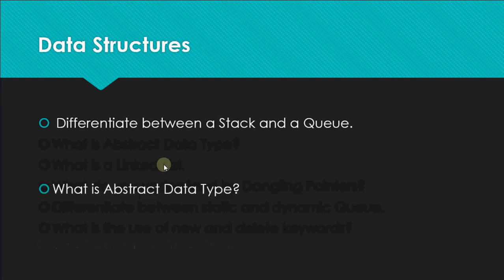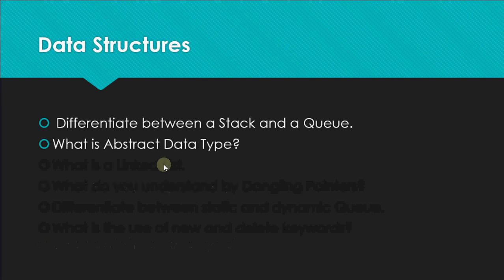What is an abstract data type? Stack and queue are both abstract data types. An abstract data type is a data type defined by the operations performed on it. Since stack and queue are defined by the operations we perform on them, they are also called abstract data types.